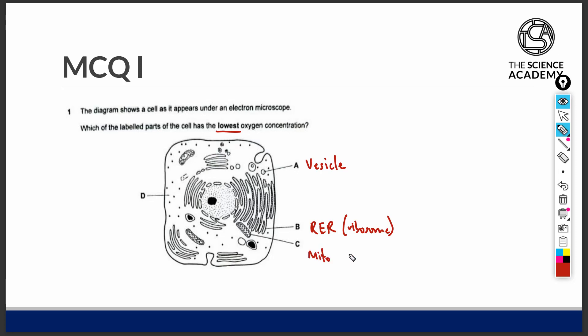C is a mitochondrion, and D is the cytoplasm of the cell.